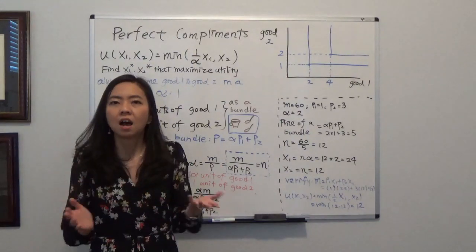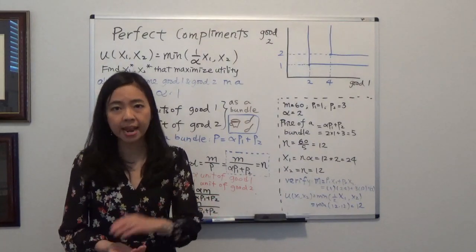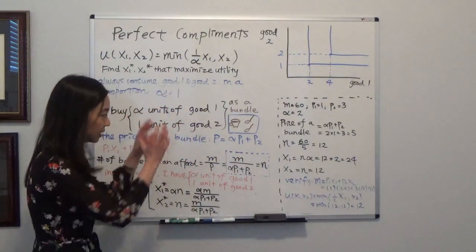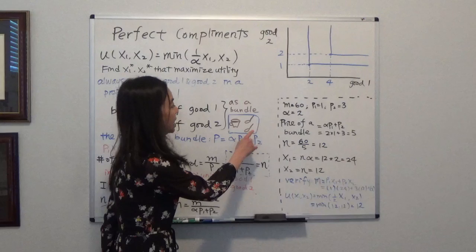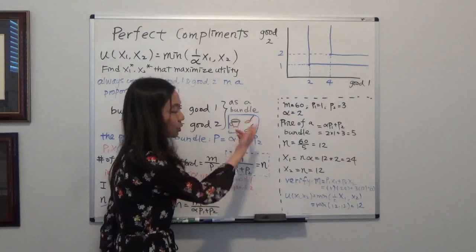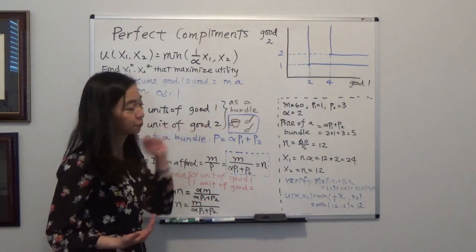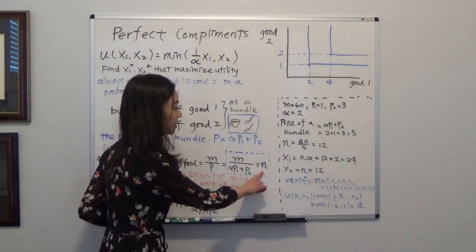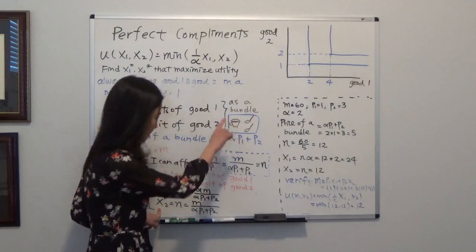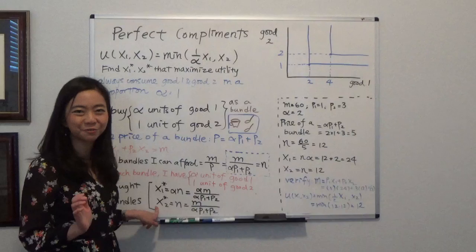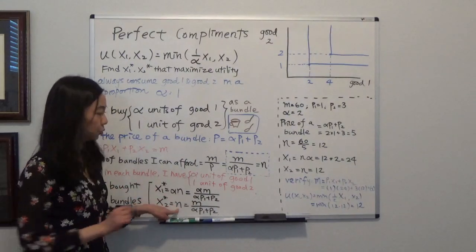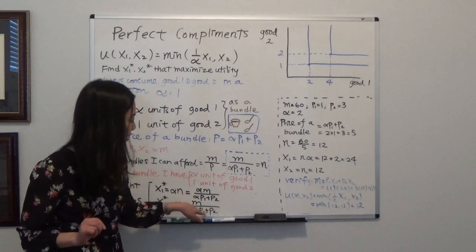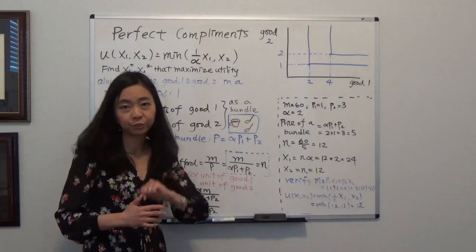Now we'll ask: how many cups of coffee will you buy and how many spoons of sugar will you buy? That depends on the number of bundles you purchase. We know that in each bundle you have a cup of coffee and alpha spoons of sugar. Since each bundle has one cup of coffee, the optimal amount of x2 — x2 star — is equal to M divided by alpha times P1 plus P2.